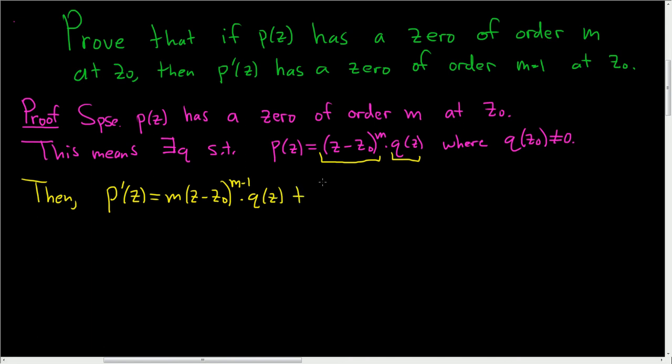Plus the first factor, z minus z naught to the m times the derivative of the second factor, q prime of z.